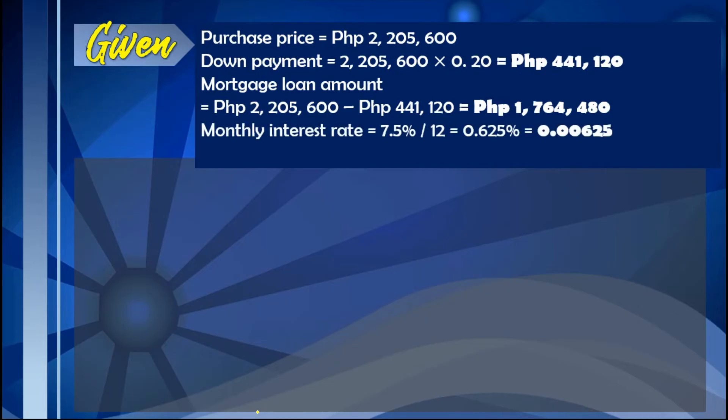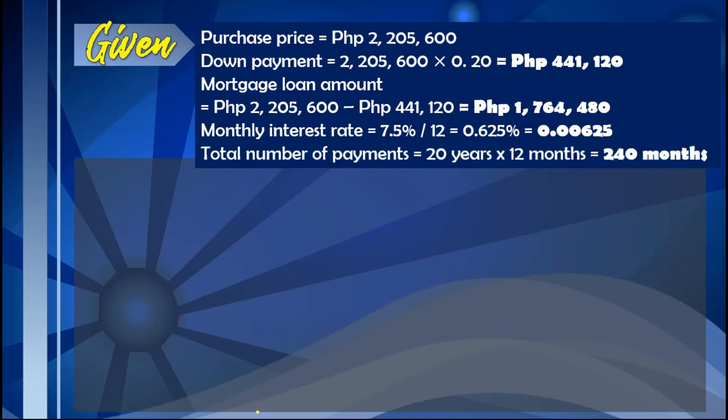The monthly interest rate is equal to 7.5% divided by 12, since 7.5% is given per year. So the monthly interest rate is 0.00625. And the total number of payments — 20 years multiplied by 12 months — gives us 240 months in total.